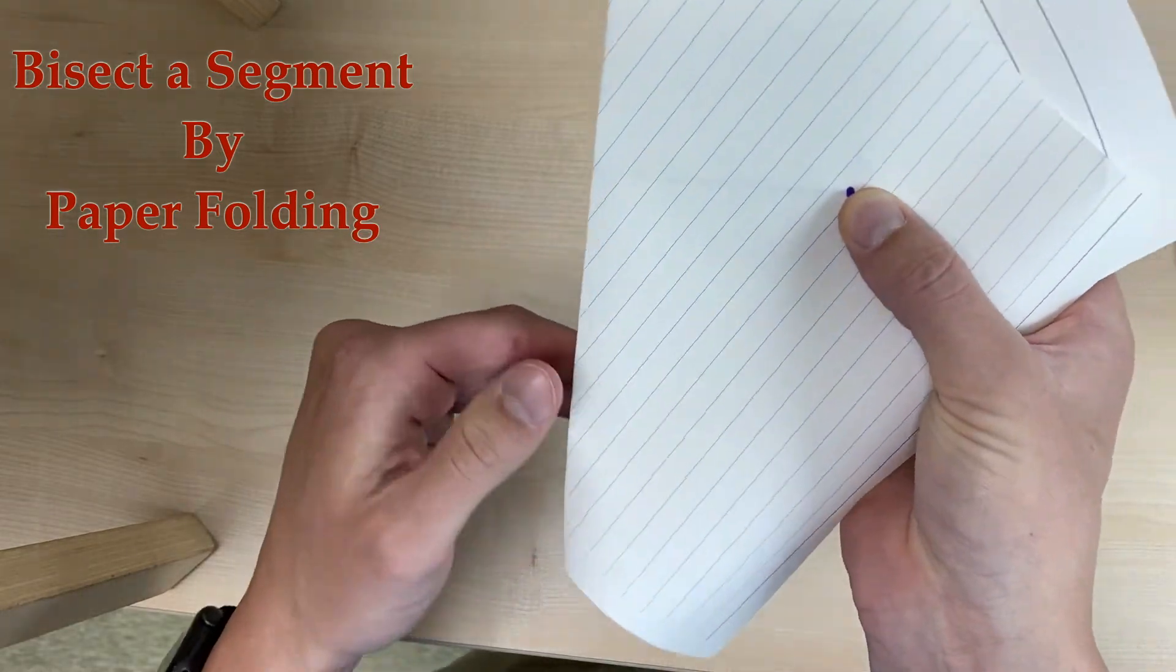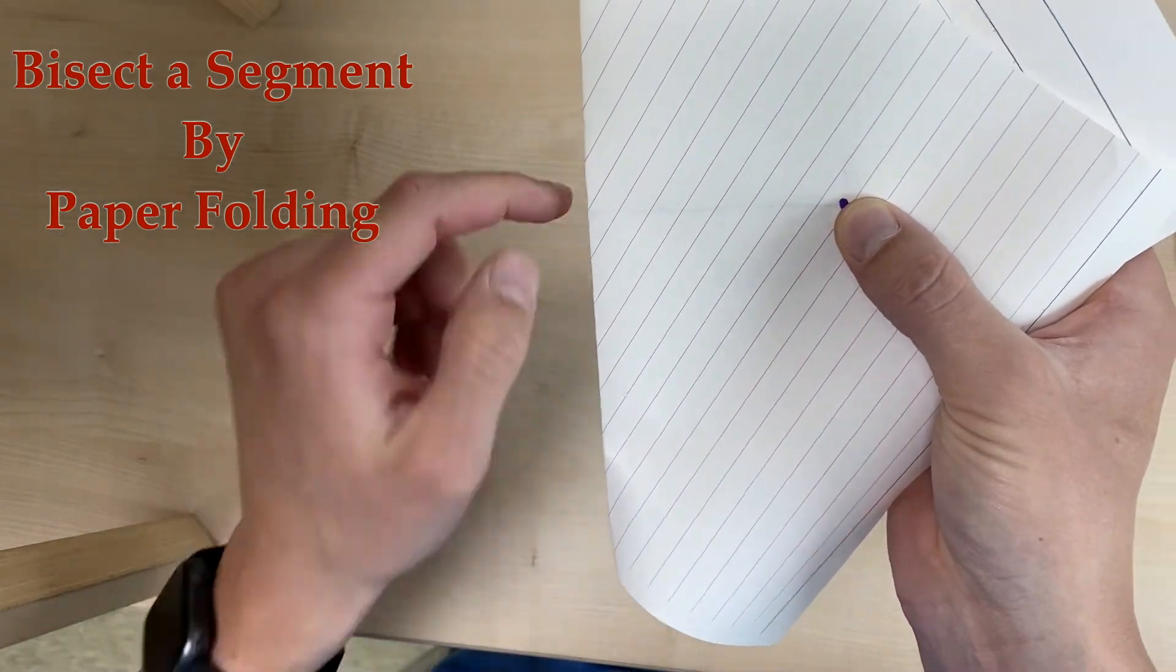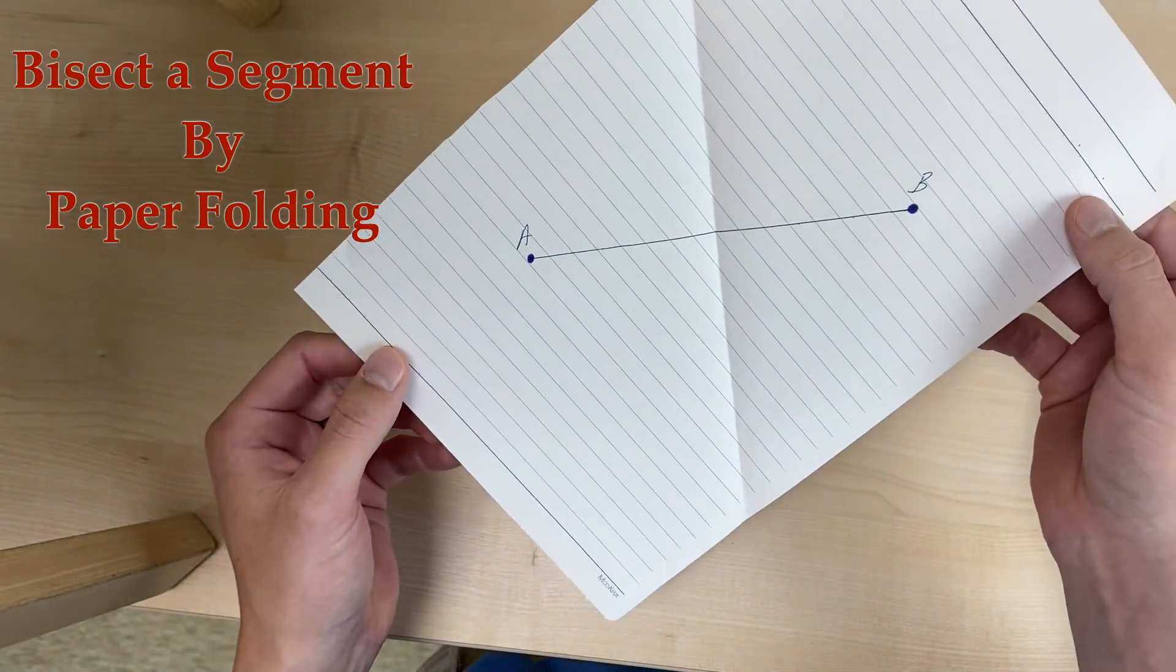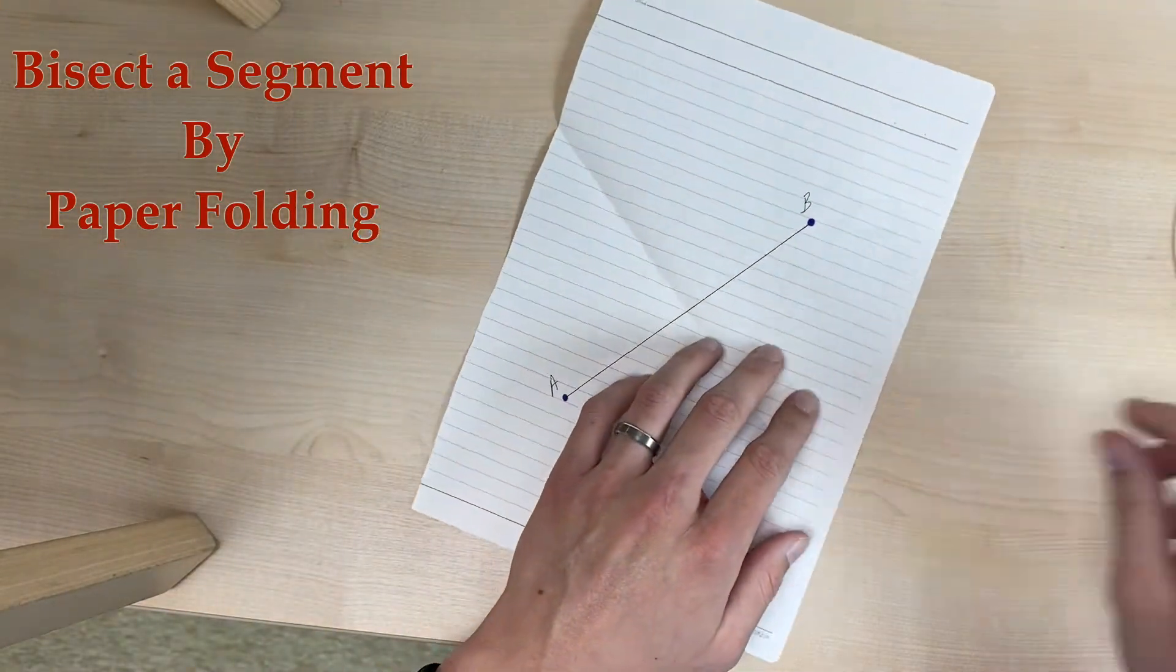And if you can see our line right here, that's creating our segment bisector right there. So now we can unfold our paper and we have found our perfect midpoint of our segment AB.